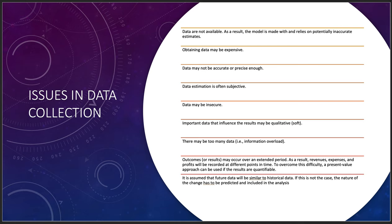Accuracy and precision really matter. Compare your social media platforms to see what they think they know about you — it's fascinating. Data estimates are often subjective; if you're making decisions off flawed data, your decision will be flawed. Data may also be insecure — subject to alteration. If you're buying data from someone else or connecting to a public data pool, that pool may be changing constantly, affecting your model's results.